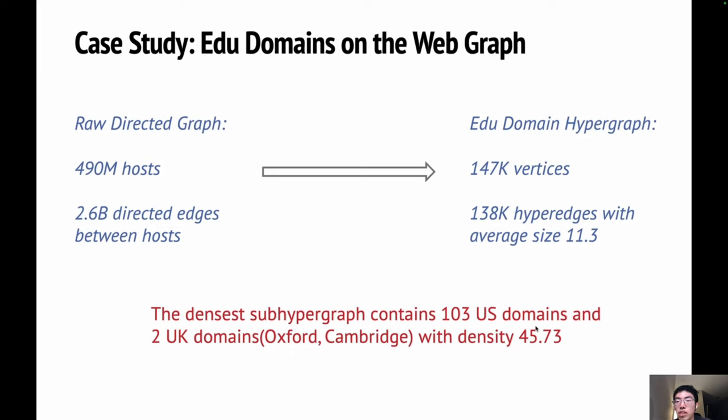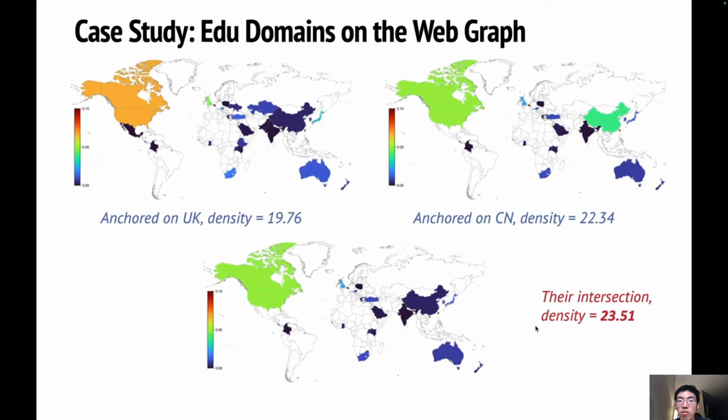Unsurprisingly, the result mostly contains US domains. To dig out more information, we compute the anchored densest subhypergraphs anchored on UK domains and Chinese domains. We display the returned dense sets using heatmaps. Interestingly, if we intersect the two results, we can get an even denser set.